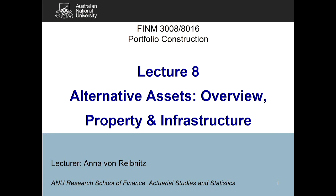Today we're moving into our alternative assets. We're going to start with an overview of what alternative assets are. In this course we look at property, infrastructure, hedge funds, private equity, and commodities. These are quite different asset classes. Property and infrastructure have a lot of similarities, but hedge funds and commodities behave in very different ways.